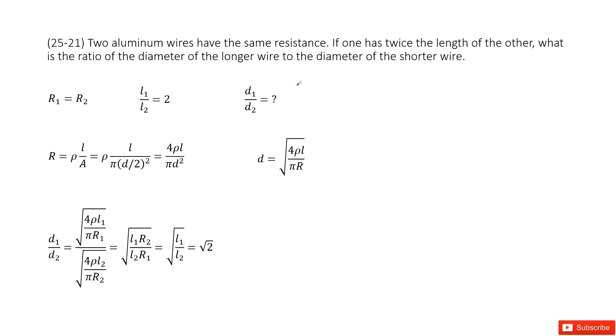We have two aluminum wires with the same resistance. We can write down that there are two wires, so R1 equals R2.